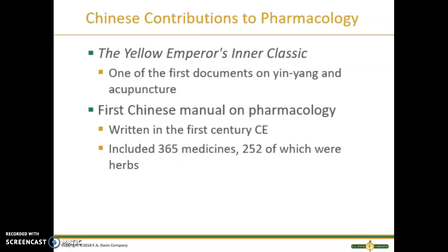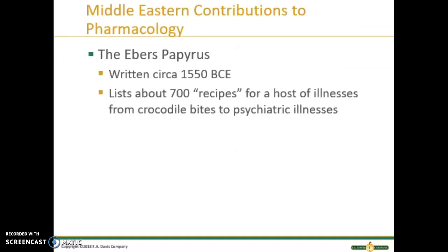The first society we'll talk about is the Chinese contribution to pharmacology. The Yellow Emperor's Inner Classic is one of the first documents on yin yang and on acupuncture. The first Chinese manual on pharmacology was written in the first century CE. It included 365 medicines, 252 of which were herbs, and Chinese medicine is still alive and well today.